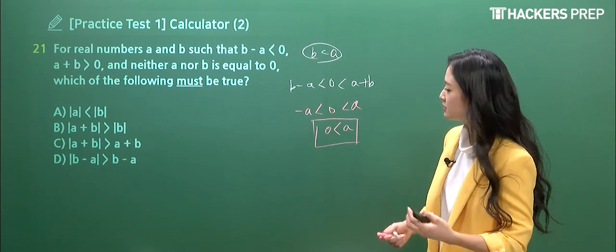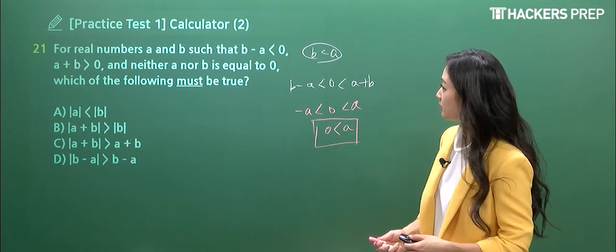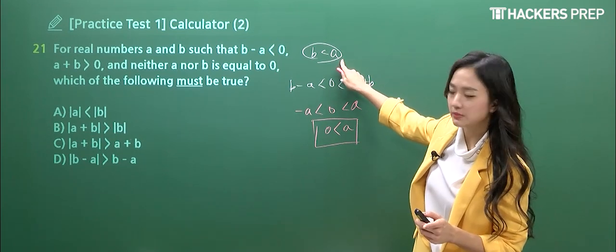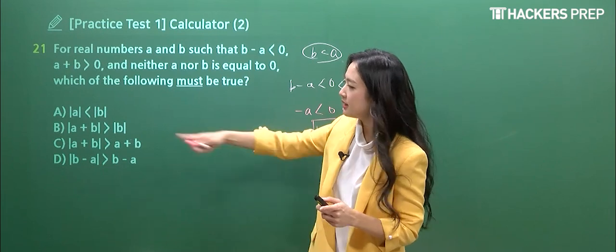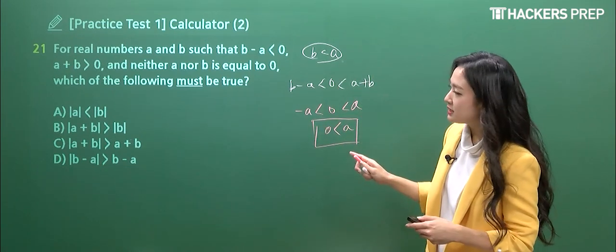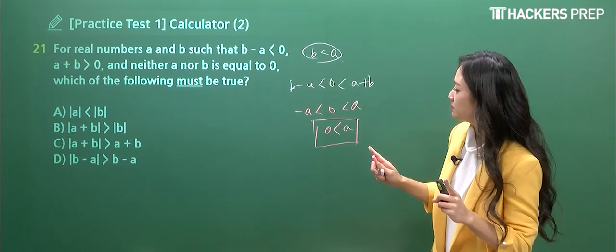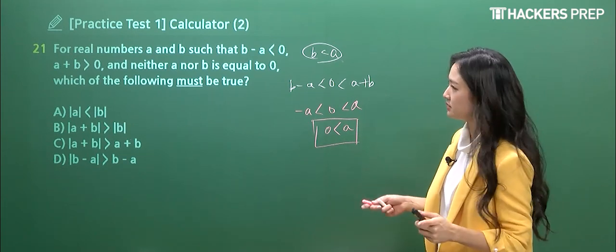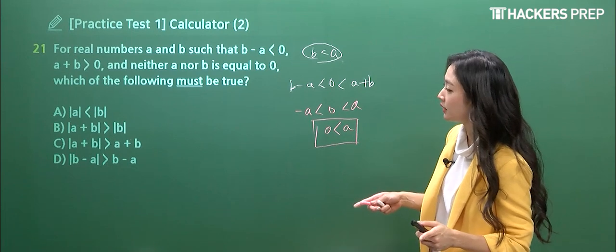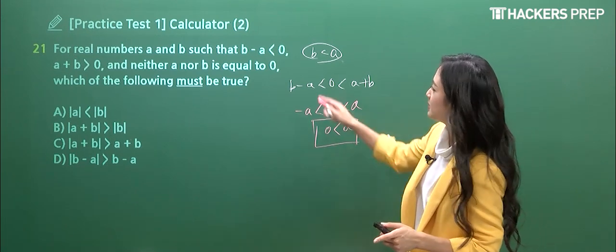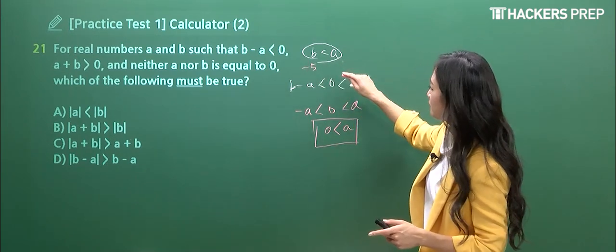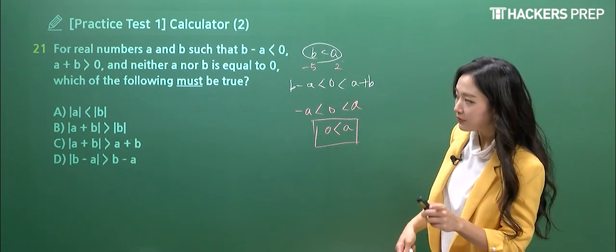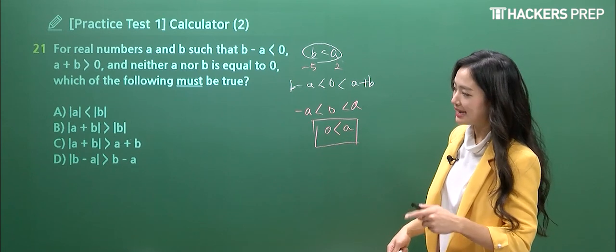So for instance, the first one. If A is greater than zero, should the absolute value be less than B? I think that's an incorrect statement, right? So you get rid of it. And the second one, A plus B, the absolute value, being greater than the absolute value of B. If this is quite difficult, you can plug in some of the numbers. So for instance, if you had B as a value of negative five and A a positive two, we can actually refute this claim as well, right? So you're left with two answer choices of C and D.